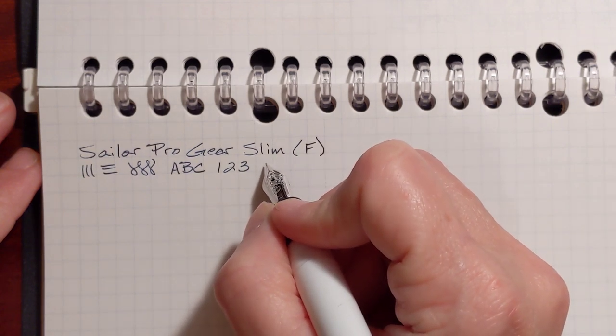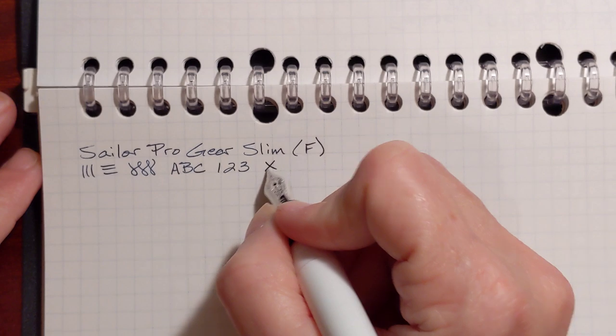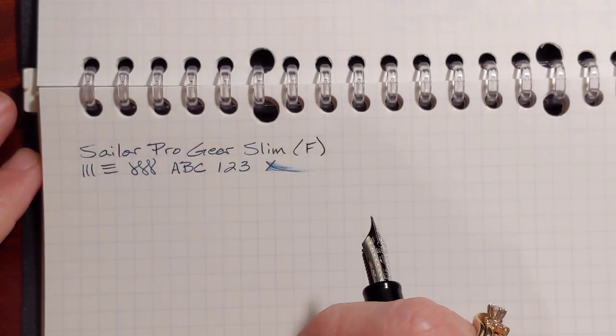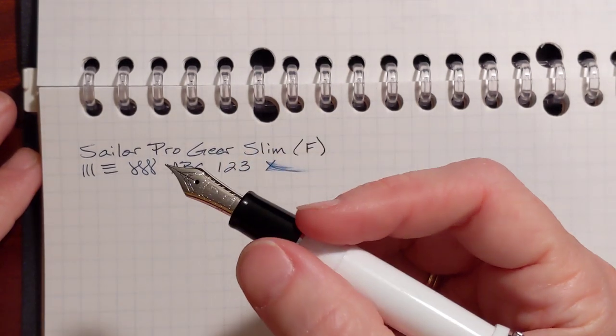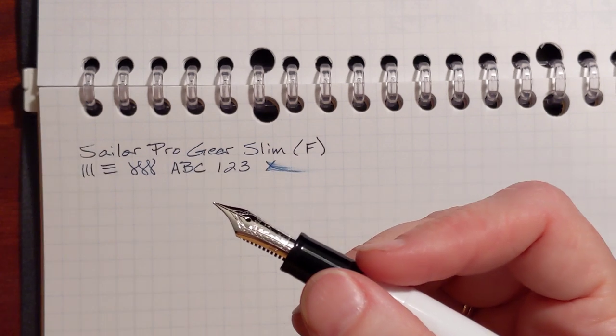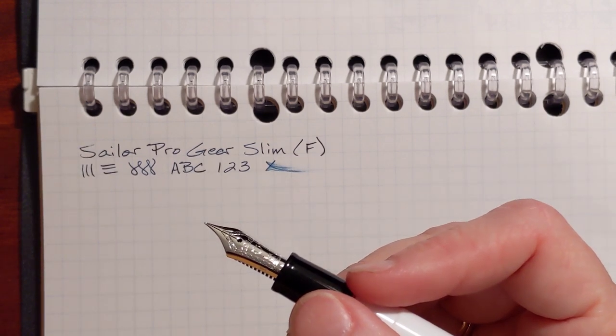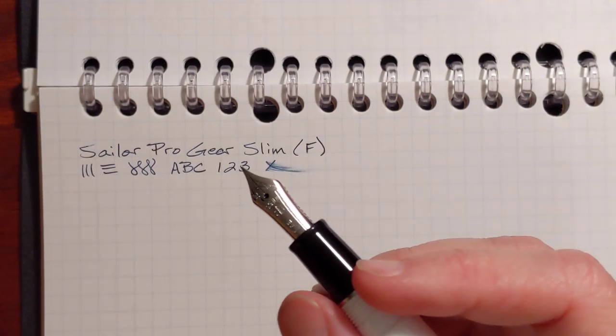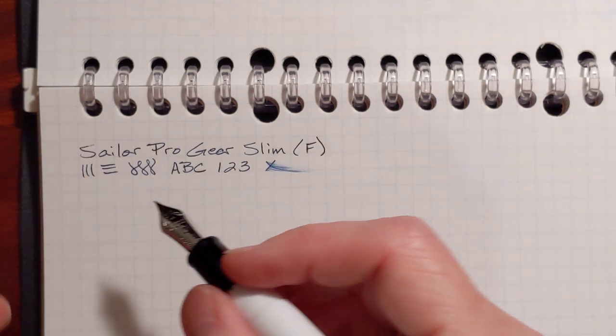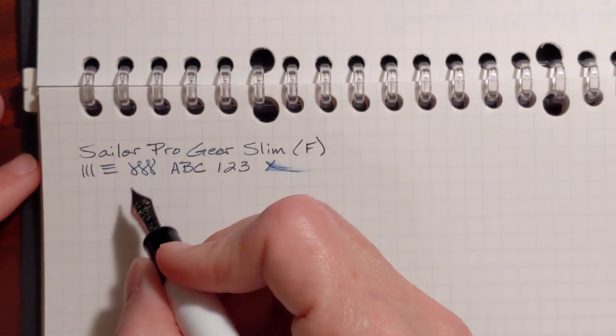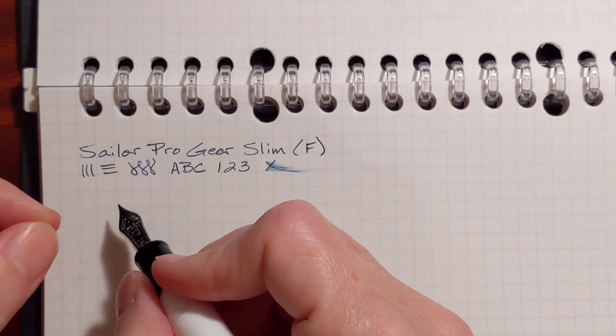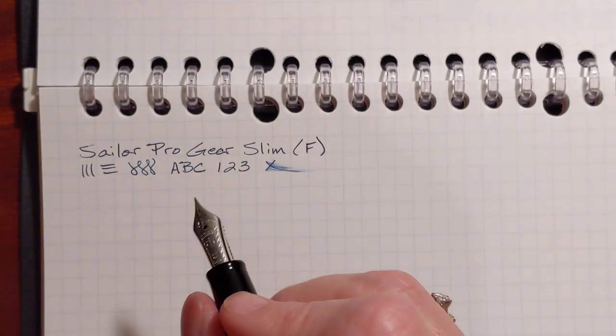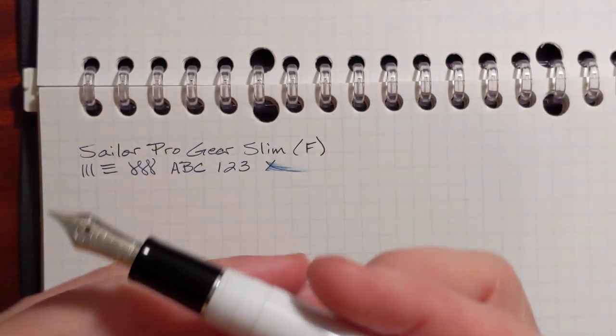However, I find that when I write in my Leuchtturm, it tends to pick up paper fibers. And with this pen, when it picks up just one little paper fiber, it will start writing just a fat blobby line.